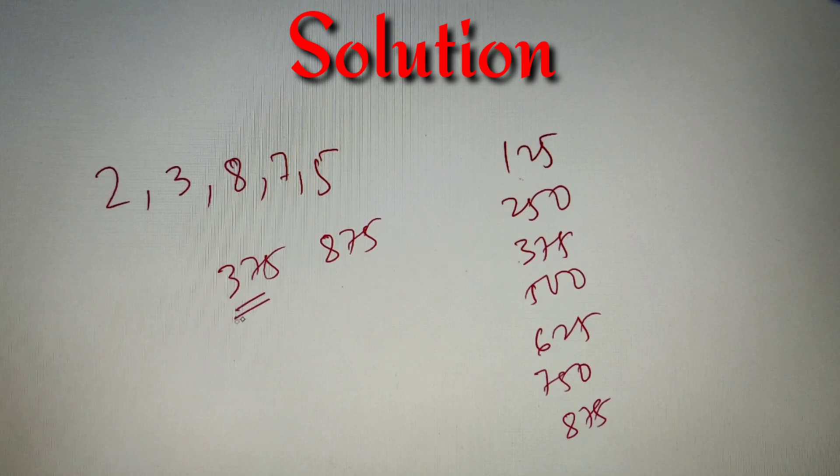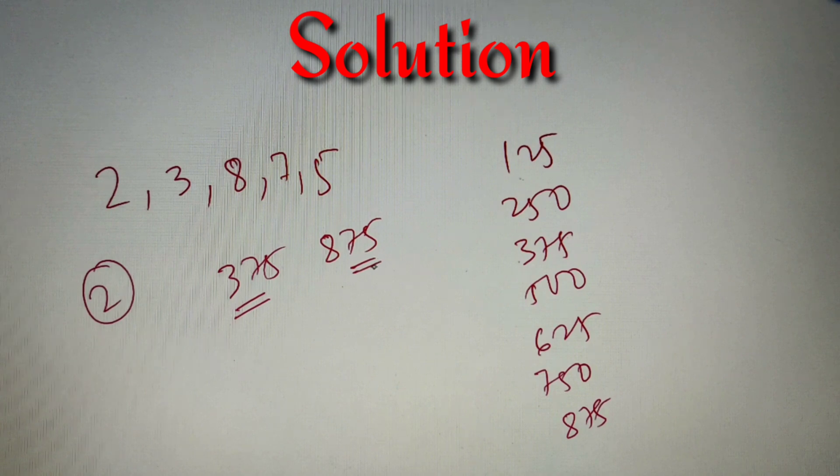Now if my number ends with 375, I can have two possible cases: 28375 and 82375. So my total number of ways is 2.